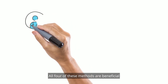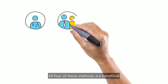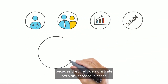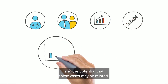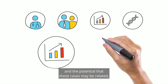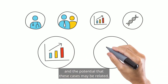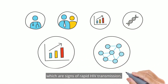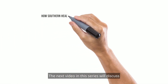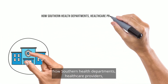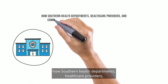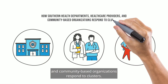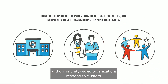All four of these methods are beneficial because they help demonstrate both an increase in cases and the potential that these cases may be related, which are signs of rapid HIV transmission. The next video in this series will discuss how southern health departments, healthcare providers, and community-based organizations respond to clusters.